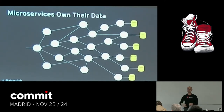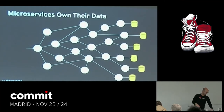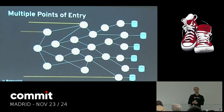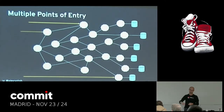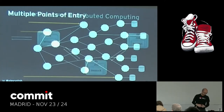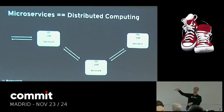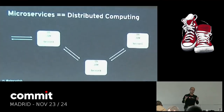Of course, each of the services has its own databases, and also one of the things we have is multiple entry points. For this reason it's really interesting to have things like API gateways, which allow you to reach services directly. At the end, microservices is distributed computing — we have service A, service B, service C, all connected by network, sending requests and responses.